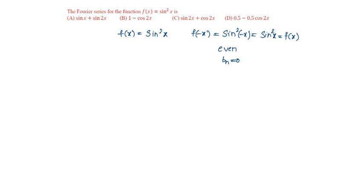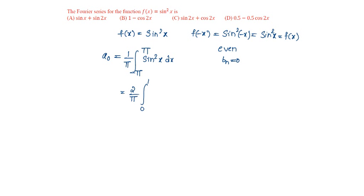Let us find a₀ and aₙ. a₀ will be equal to (1/π) integral from -π to π of sin²x dx. Since this is an even function, this can be written as (2/π) integral from 0 to π of sin²x dx.